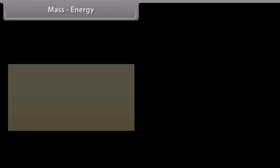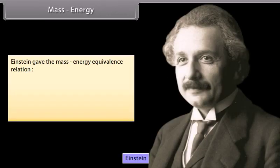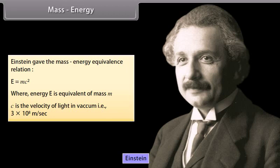Mass energy. Einstein gave the mass energy equivalence relation E is equal to MC square, where energy E is equivalent of mass M. C is the velocity of light in vacuum, that is 3 into 10 raised to the power 8 meter per second.